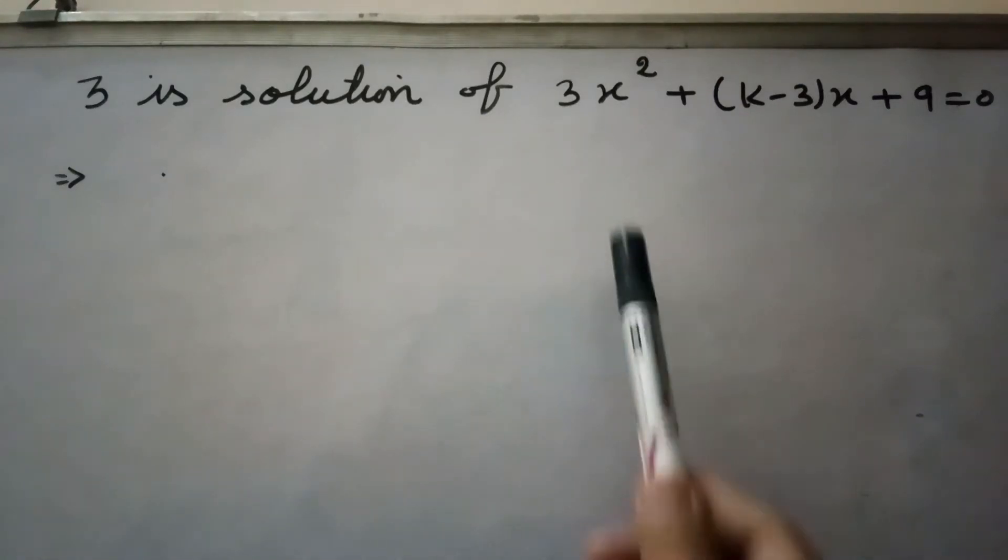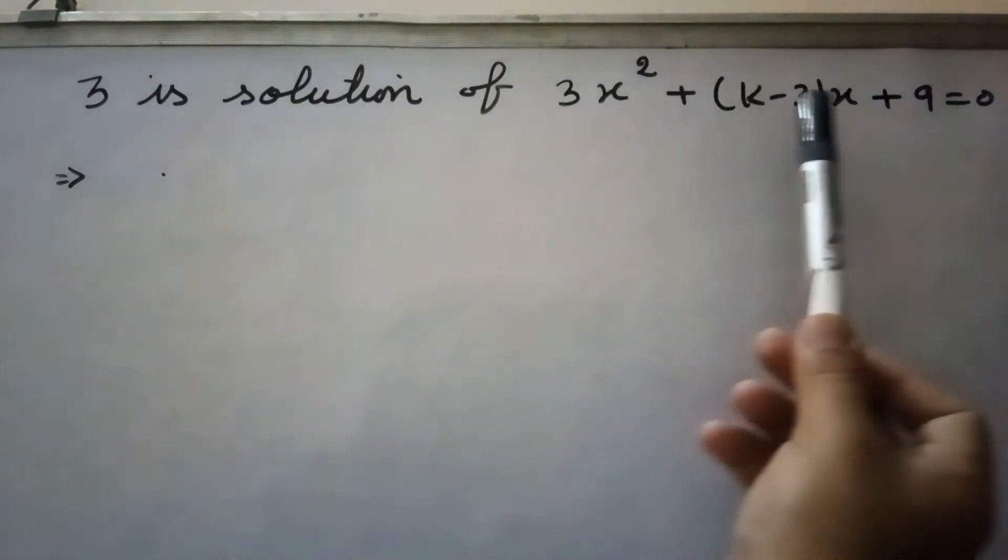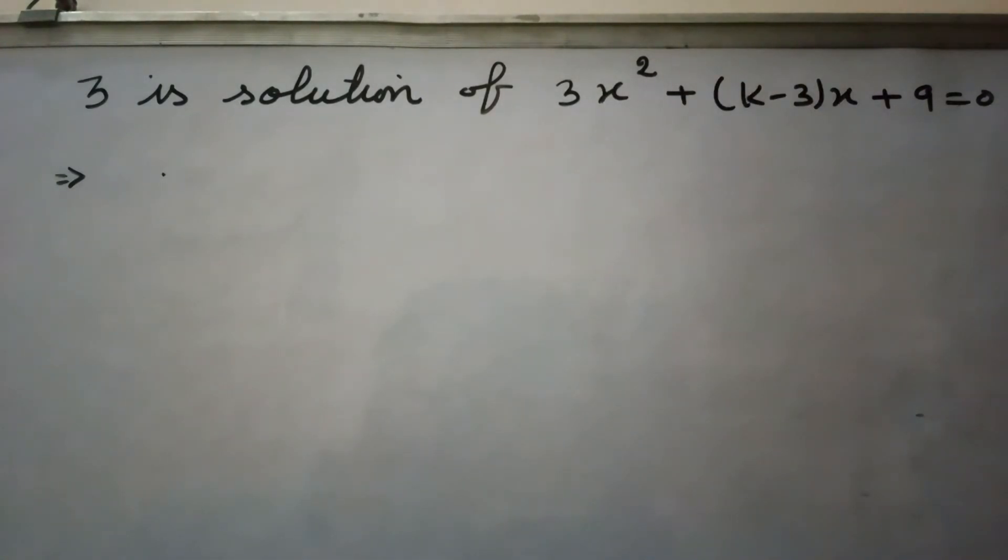Question 3: if 3 is the solution of this equation, we need to find the value of k. So what we will do is we will put the value of 3 where x is here and we will calculate the value of k.